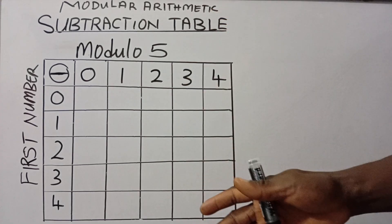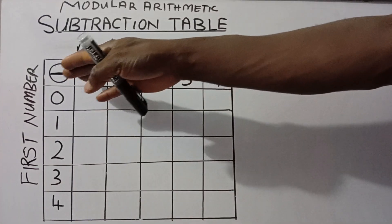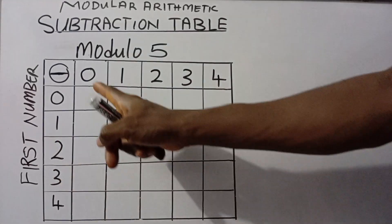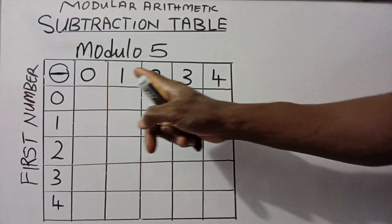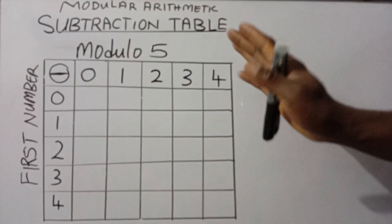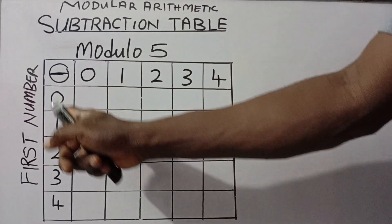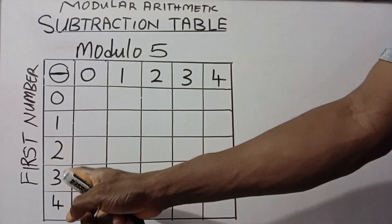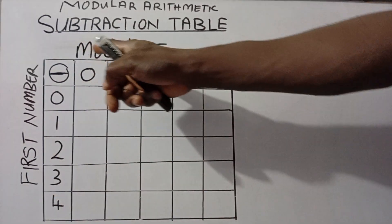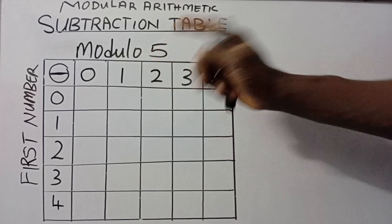In this arrangement, you'll be given the numbers in rows and columns. Here we have 0, 1, 2, 3, 4 in the row part, then 0, 1, 2, 3, 4 in the column part, of which the calculation is to be done in Modular 5.